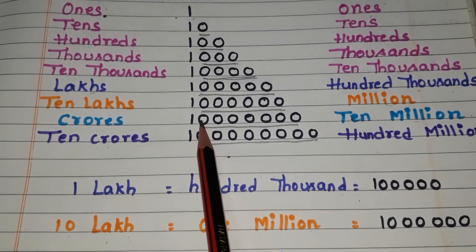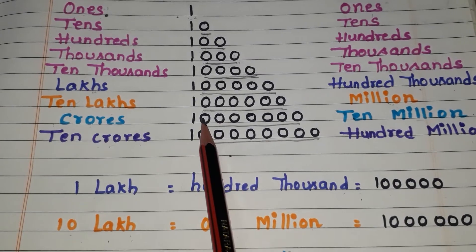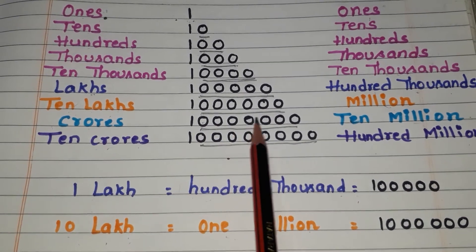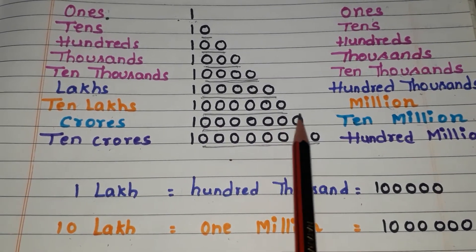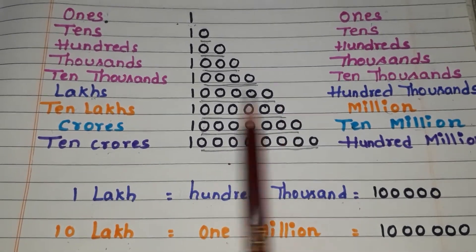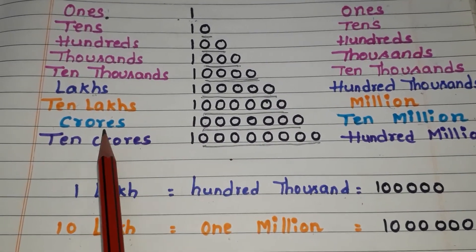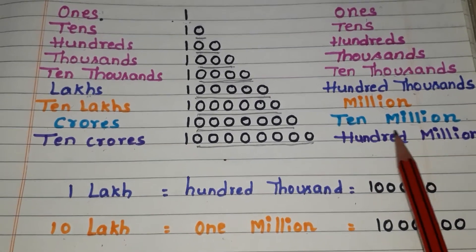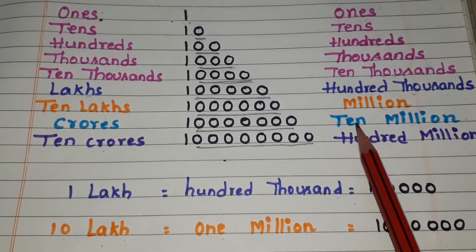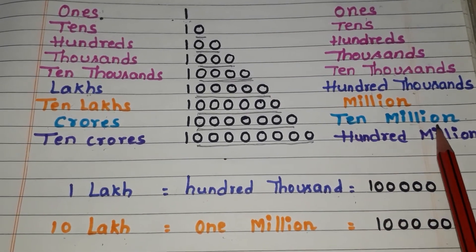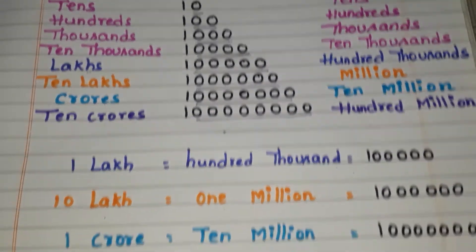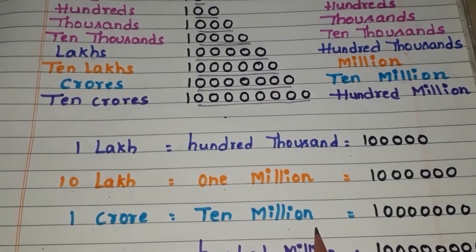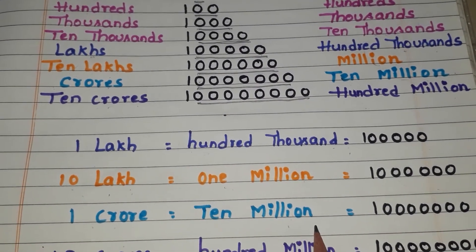Coming to here, count the zeros: 1, 2, 3, 4, 5, 6, 7 — 7 zeros. In the Indian system we call it crores, and in the international system we call it 10 million. So 1 crore is equal to 10 million.